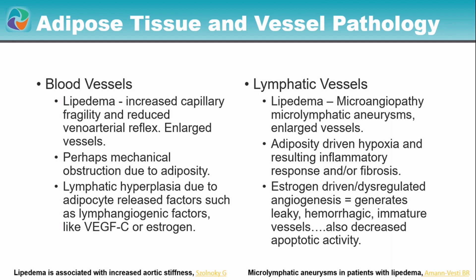Some research talks have pointed out that there are issues with blood vessels as well as lymphatic vessels. Estrogen could be playing a role, particularly with VEGF — the growth of those vessels. The overgrowth of these vessels could occur with estrogen signaling. The blood vessels and lymphatic vessels are within this adipose tissue that's releasing these hormones, so the adipose tissue is not the only one responding — the vessels within the adipose tissue can also change their functionality.